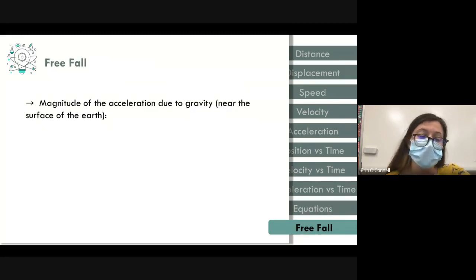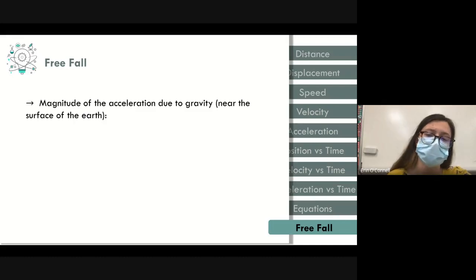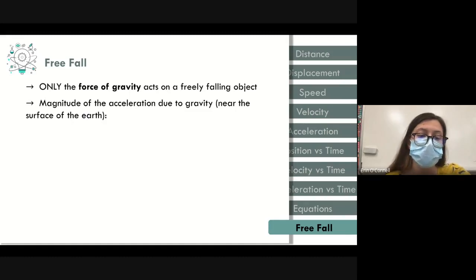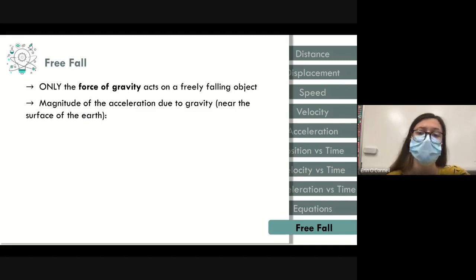Free fall is a specific type of constant acceleration where the only outside force is gravity. The constant acceleration value is g equals 9.8 meters per second squared — the magnitude of acceleration near Earth's surface. On the AP exam you can use g equals 10.